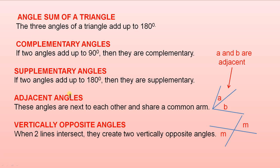Adjacent angles. These angles are next to each other and share a common arm. So A and B are adjacent, and here is the common arm. That one there.